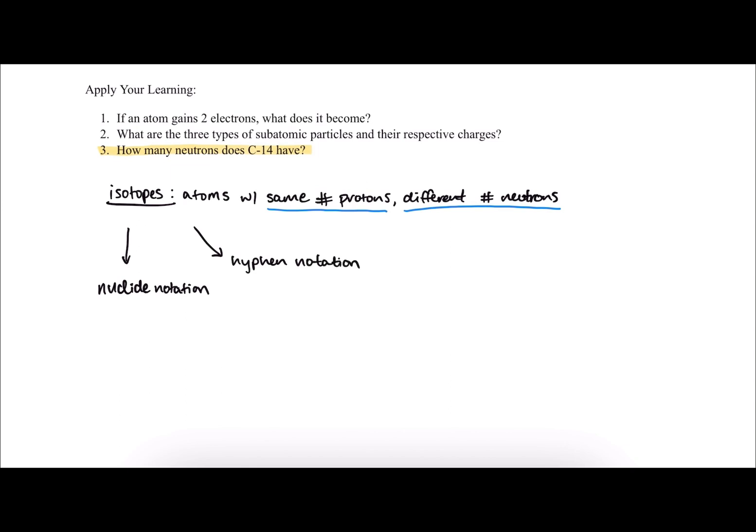To give an example of how these different notations will look, we'll use carbon-12 first. We start by using the chemical symbol of carbon. Then we write in the mass number, and this is how that's written in each notation respectively. Nuclide notation also includes the atomic number.